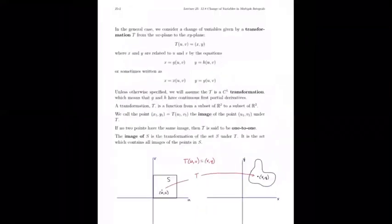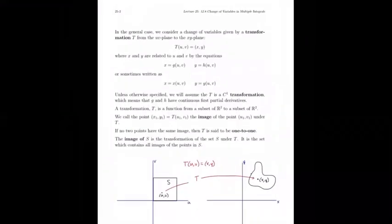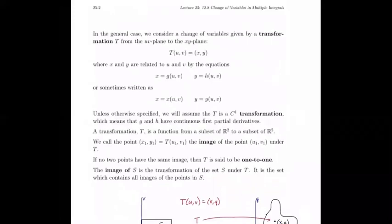We'll think about general transformations T, which take a point (u, v) in the uv-plane and map it to (x, y) in the xy-plane. The transformation T is a function that takes two coordinates u and v and returns x and y as another pair. So x is a function of u and v, and y is also a function of u and v — written as x(u,v) and y(u,v), just as we did with r and theta.